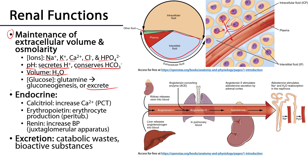The kidneys also serve an endocrine function. There are three hormones the kidneys secrete that are important to our body. The first is calcitriol, which is an activated form of vitamin D. It's secreted by cells of the proximal convoluted tubule and it is an important cofactor for the absorption of calcium from the gut lumen, so calcitriol has the impact of increasing plasma concentrations of calcium.